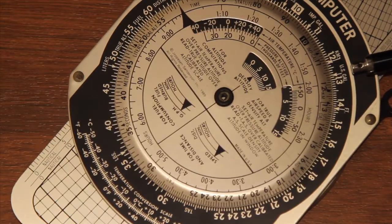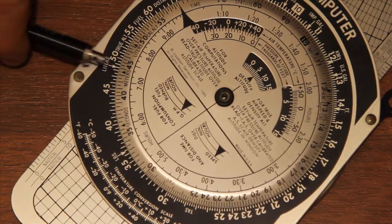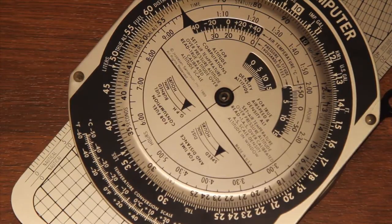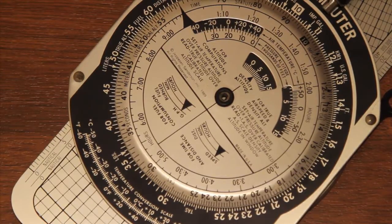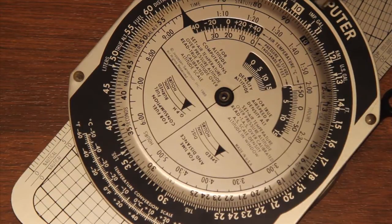So for those measurements the US gallons is here near the 13, litres is over here near the 50 on the outer scale, and imperial gallons is here between 10 and 11 on the outer scale.